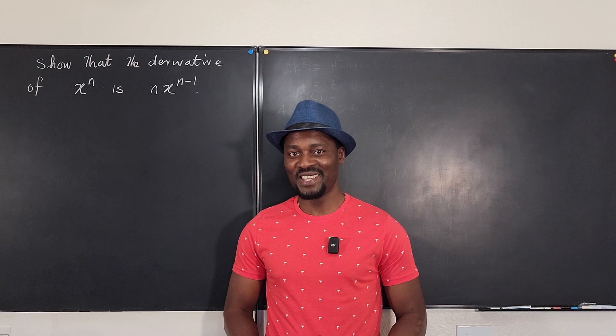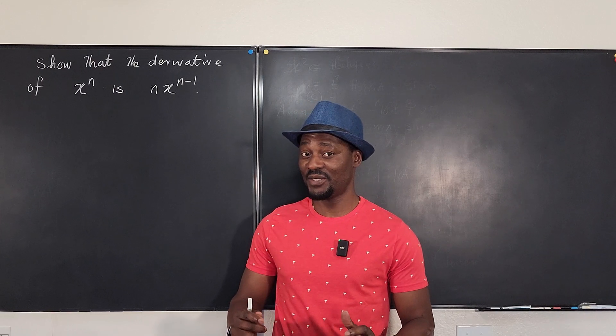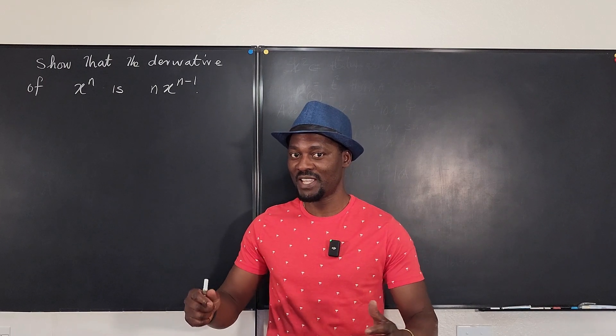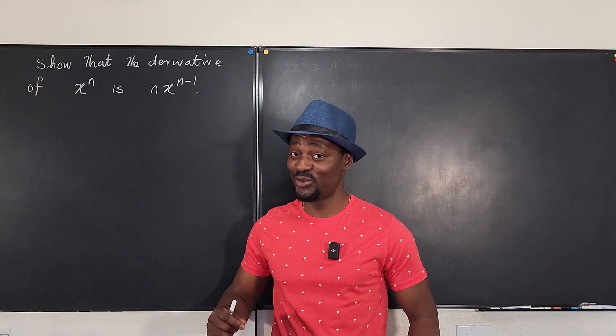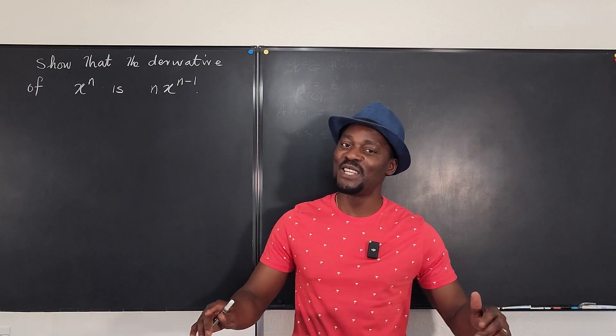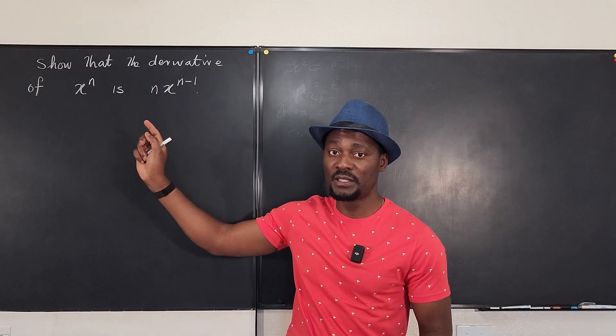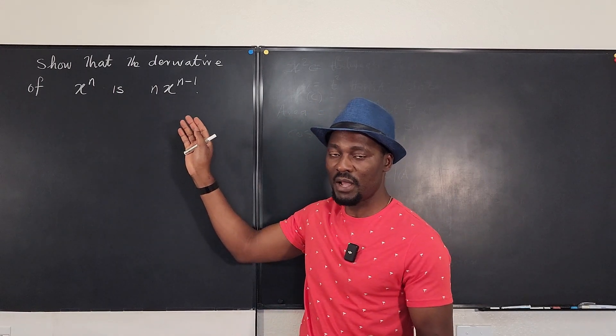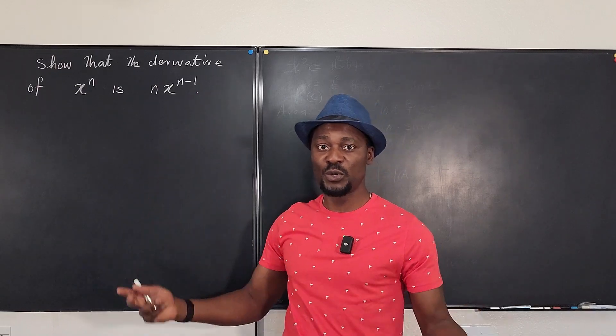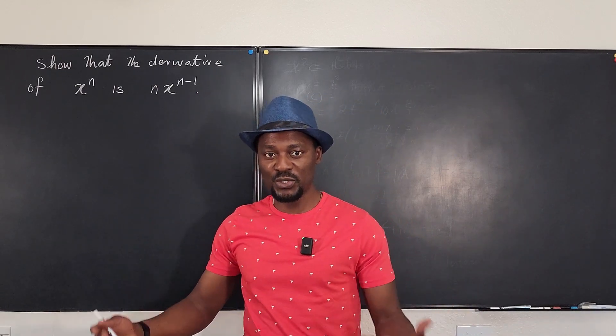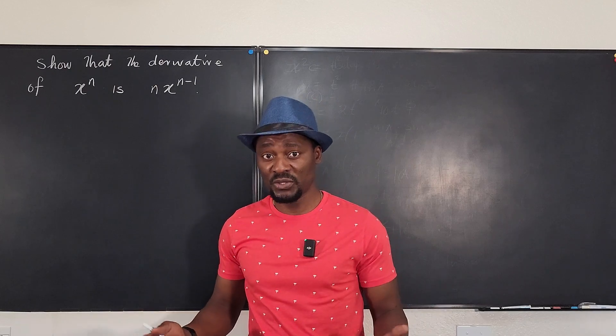Hello, welcome to another video. This is the proof of the power rule in a very weird, tricky way. I already did a video on how you can obtain the power rule—this formula, the derivative of x^n being n·x^(n-1), which we always use when we do differentiation of polynomials.